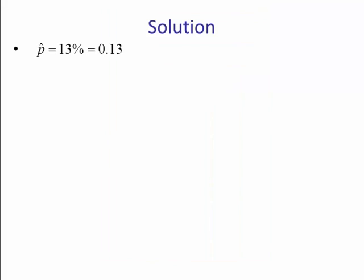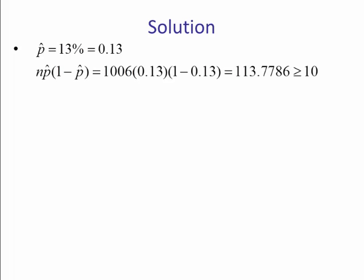So back to the problem. P-hat was given in the problem as 13%, so if we express it as a decimal, 0.13. Let's check our assumptions. n times p-hat times 1 minus p-hat has to be greater than or equal to 10. So we take 1,006, multiply it by p-hat, times 1 minus p-hat, and we get 113.7786, which is greater than or equal to 10. So that requirement is satisfied.